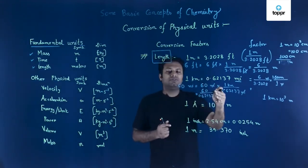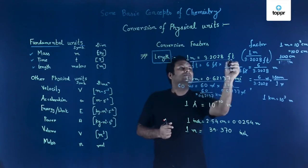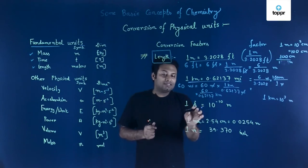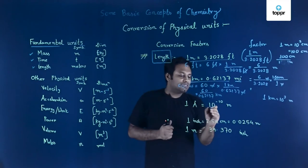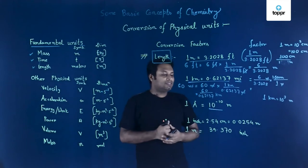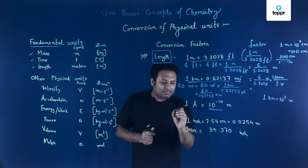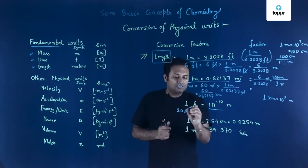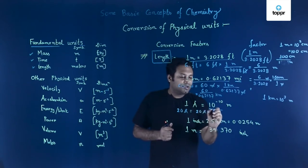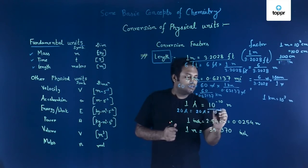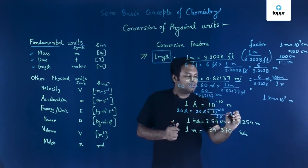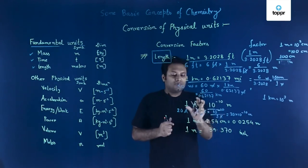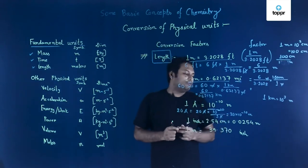If you know these small conversion formulas, you can easily convert one unit into another. Another important unit is the angstrom: 1 angstrom = 10⁻¹⁰ meters. For example, 20 angstroms = 20 × (10⁻¹⁰ m / 1 angstrom) = 20 × 10⁻¹⁰ meters. The angstrom unit cancels and you get the result in meters.